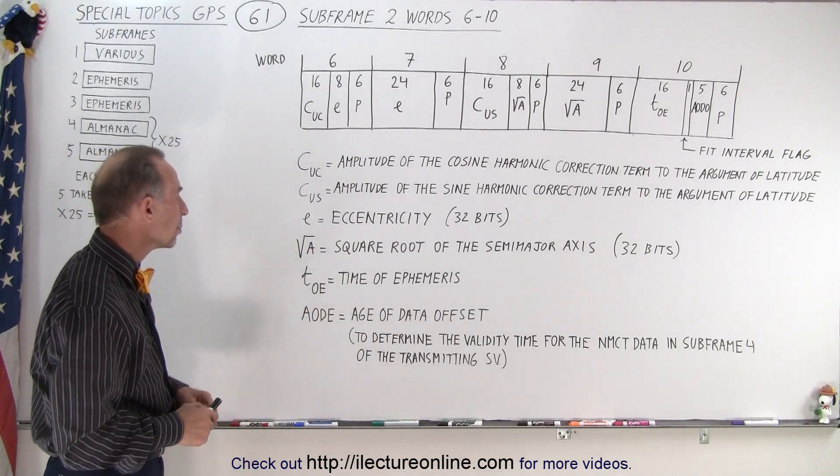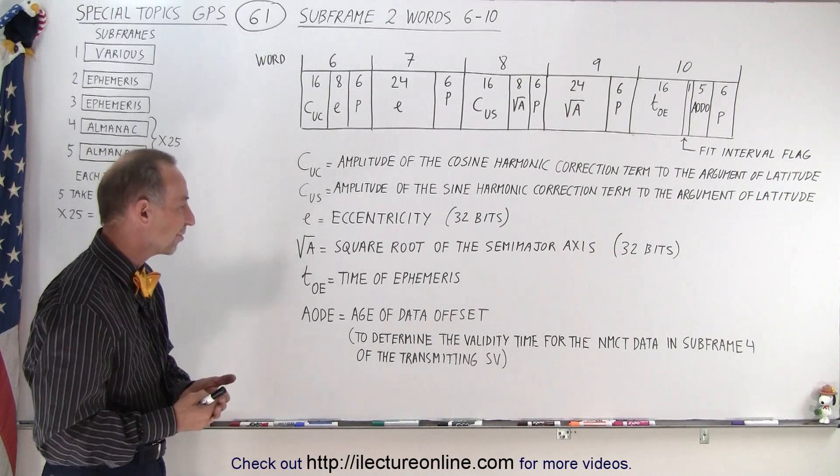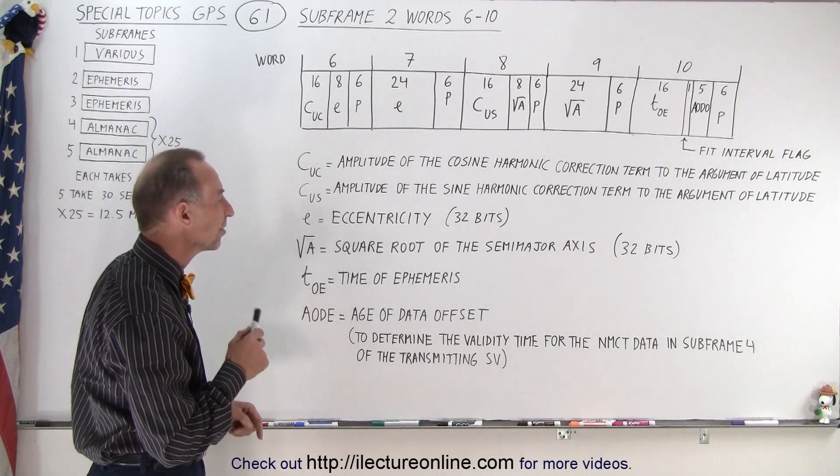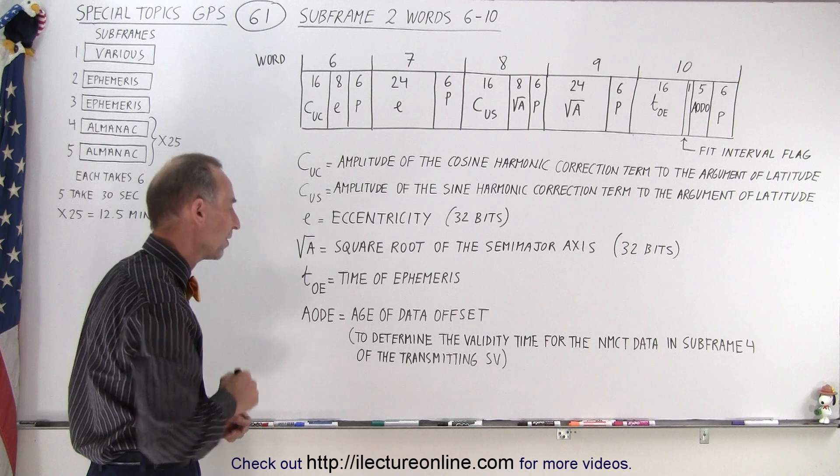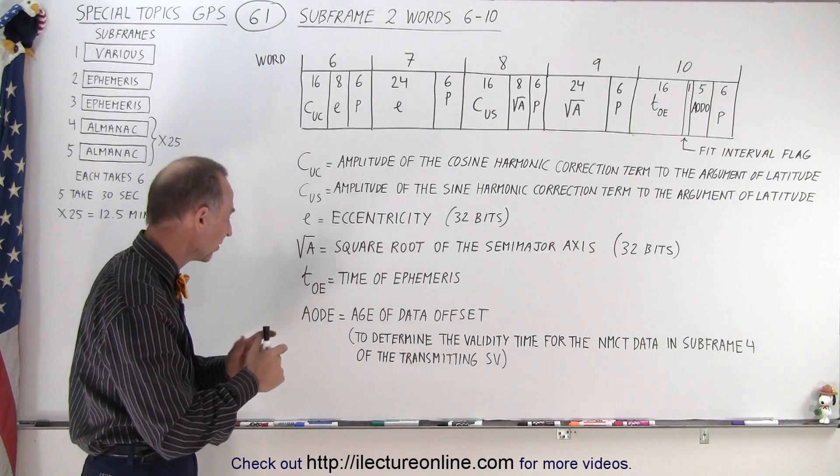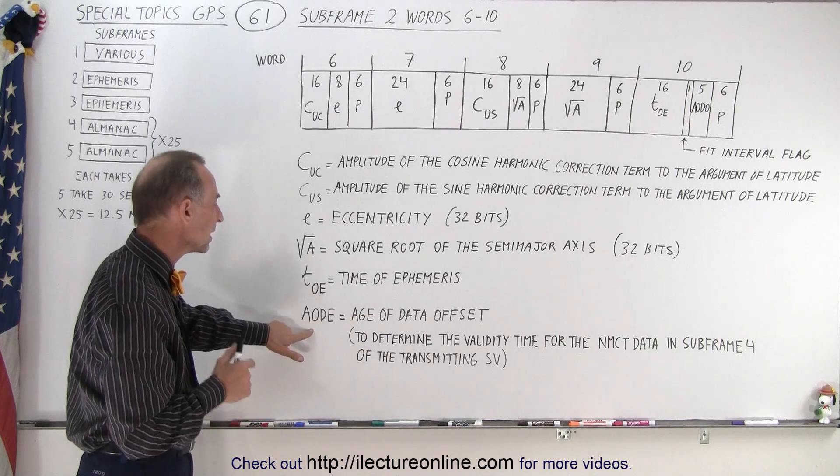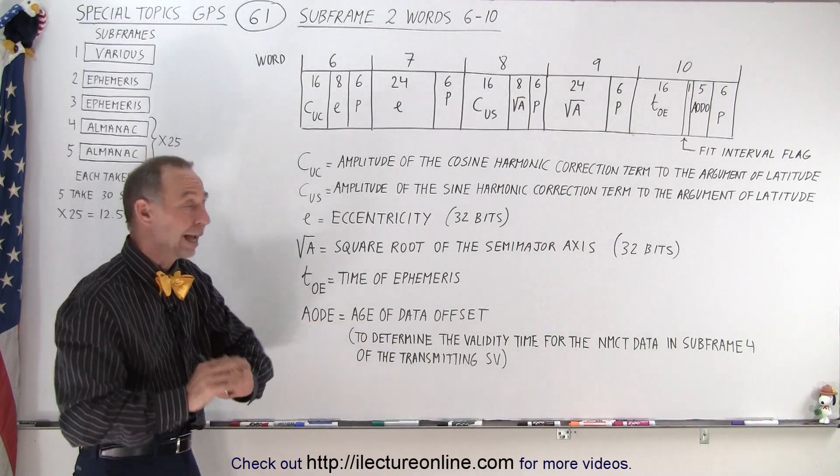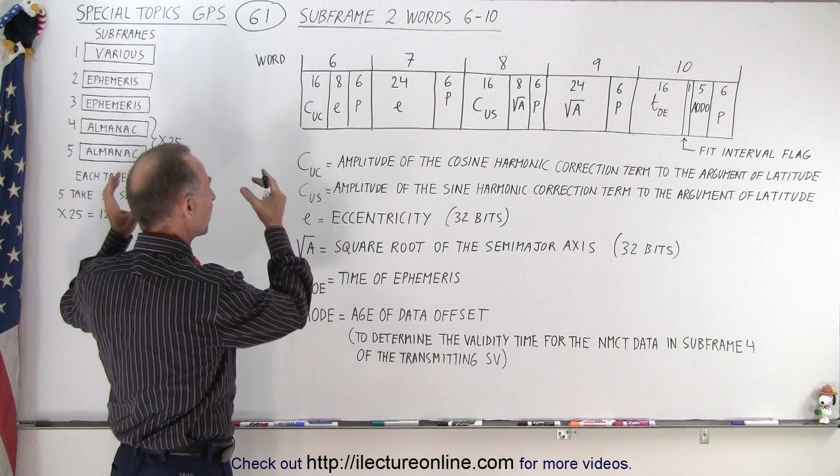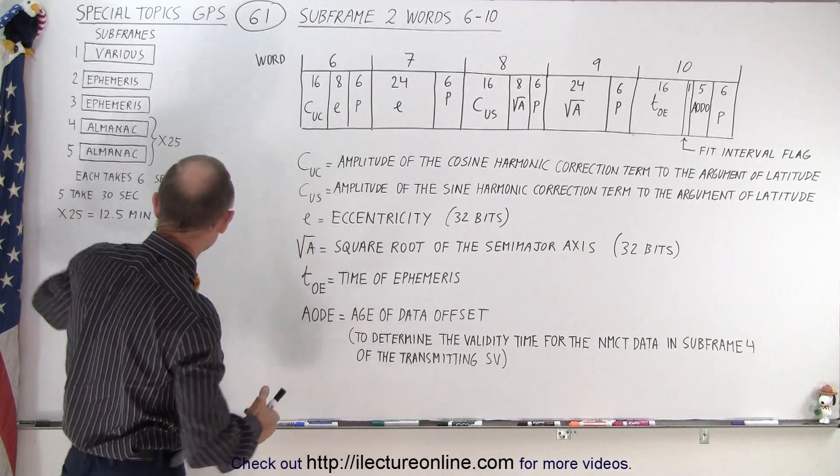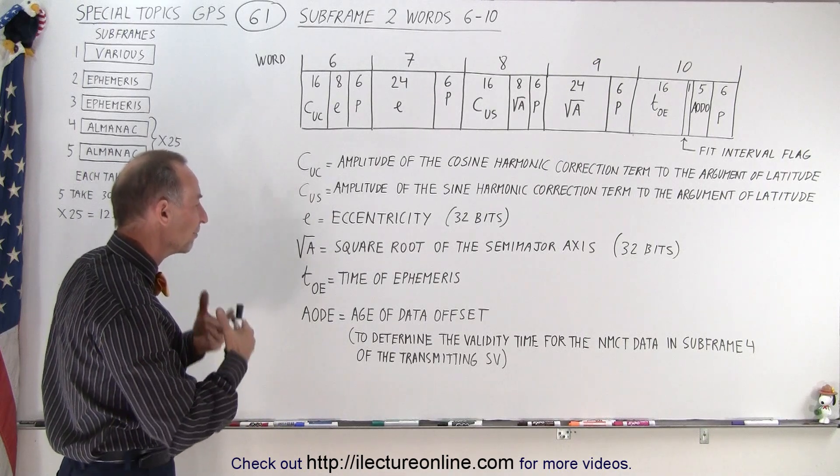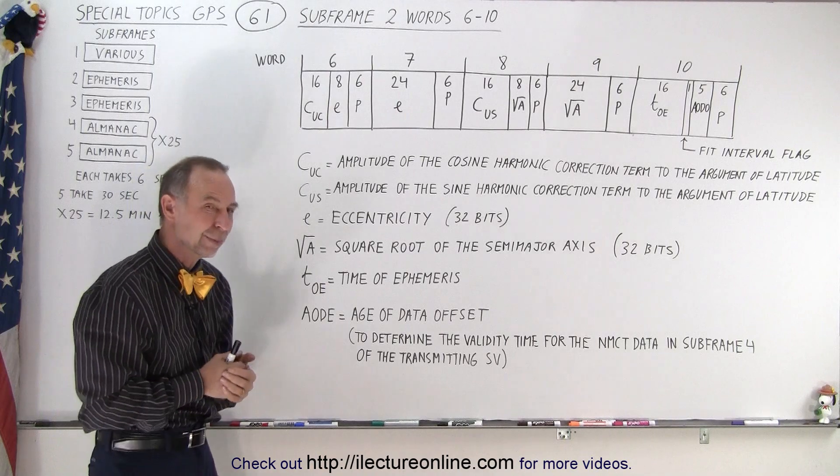Finally, we have the AODE, which is the age of the data offset. What is that used for? It's to determine the validity time for the NMCT data in subframe 4 of that particular transmitting SV. The AODE is the age of the data offset. We want to see how much the data has aged when we compare the ephemeris data to the data in the almanac in order to verify and validate that we have the correct information for the transmitting SV.